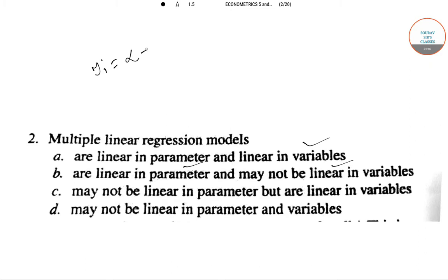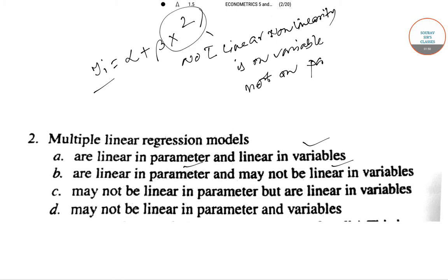Now in the case of multiple linear regression model, the equation can be like this. Here the important thing is that though here we have the x squared term which is not linear, this non-linearity is on the part of the variable, not on the parameter. So the correct option is it may not be linear in variables but it should be linear in parameters. So option two is the correct answer.